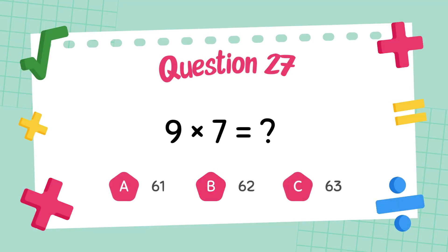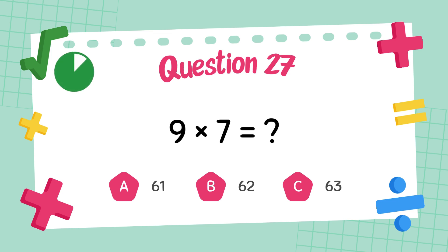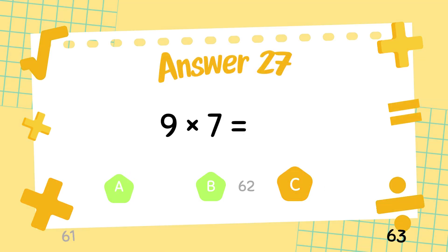What is nine times seven? The answer is sixty-three.